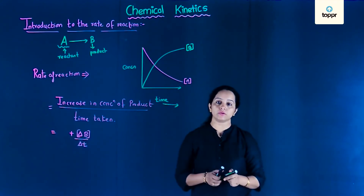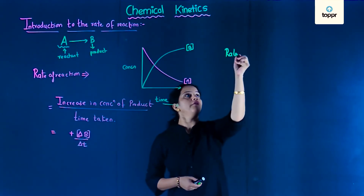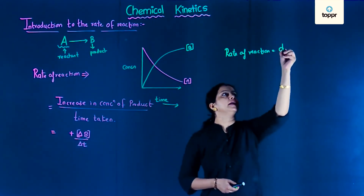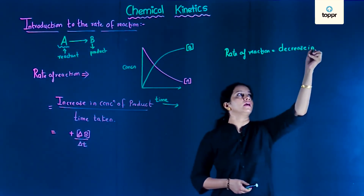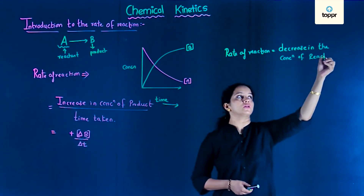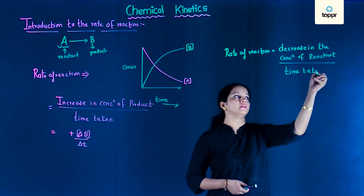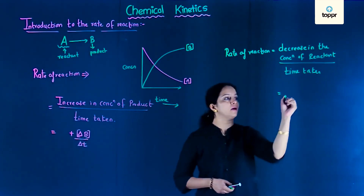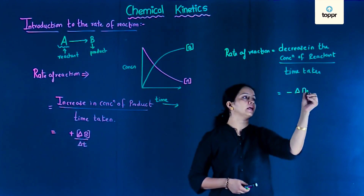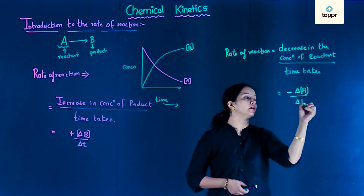With respect to product, the rate of reaction is positive — plus means there is increase in the concentration of product B. Now, if we want to write rate of reaction with respect to reactant, rate of reaction is equal to decrease in the concentration of reactant upon time taken, which equals minus delta A upon delta T.